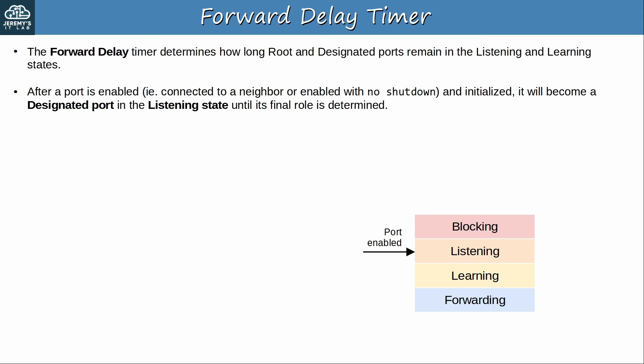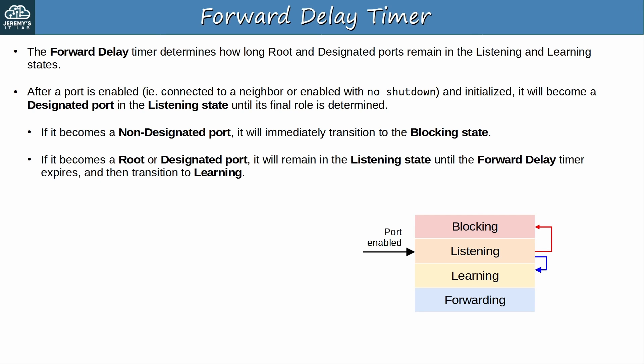Now let's look at the forward delay timer. It determines how long root and designated ports remain in the listening and learning states. After a port is enabled, for example connected to a neighbor or enabled with no shutdown, and then initialized, which can take a second or two, it will become a designated port in the listening state, until its final role is determined. If it becomes a non-designated port, it will immediately transition to the blocking state, no need to wait for the forward delay timer. If it becomes a root or designated port, it will remain in the listening state, until the forward delay timer expires, and then transition to learning. Then it will remain in the learning state, until the forward delay timer expires, and then transition to forwarding. So the whole process from port initialization to forwarding takes 30 seconds in classic STP.